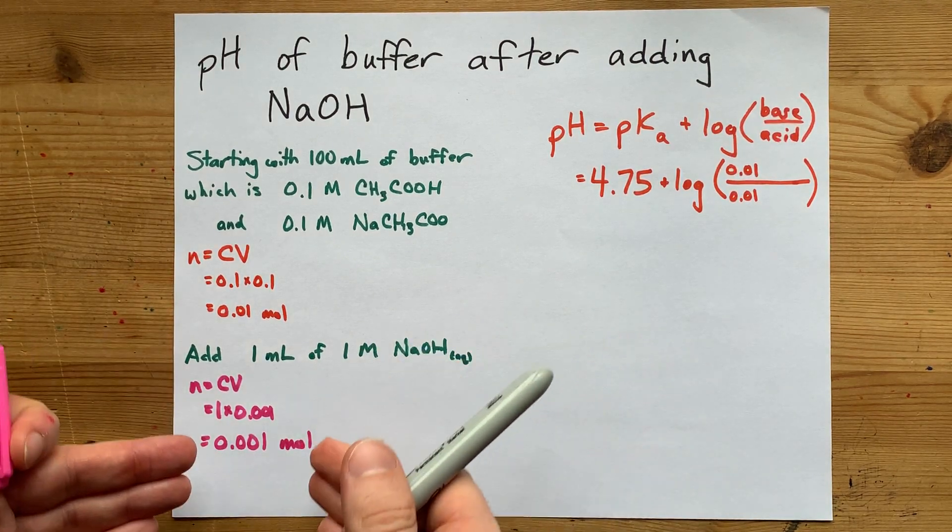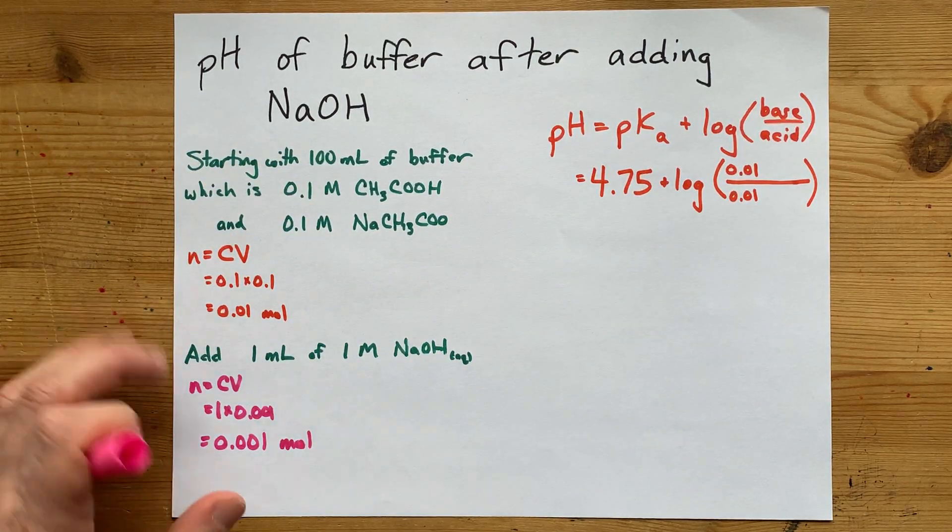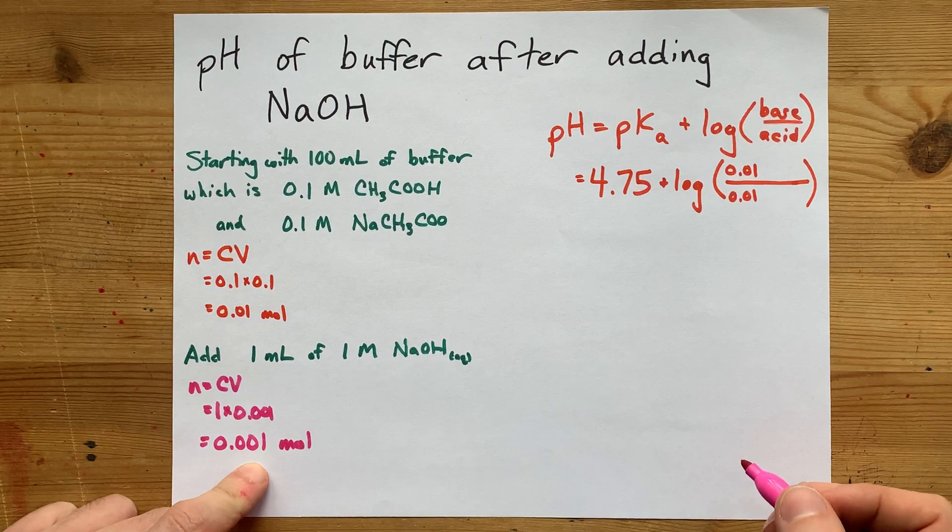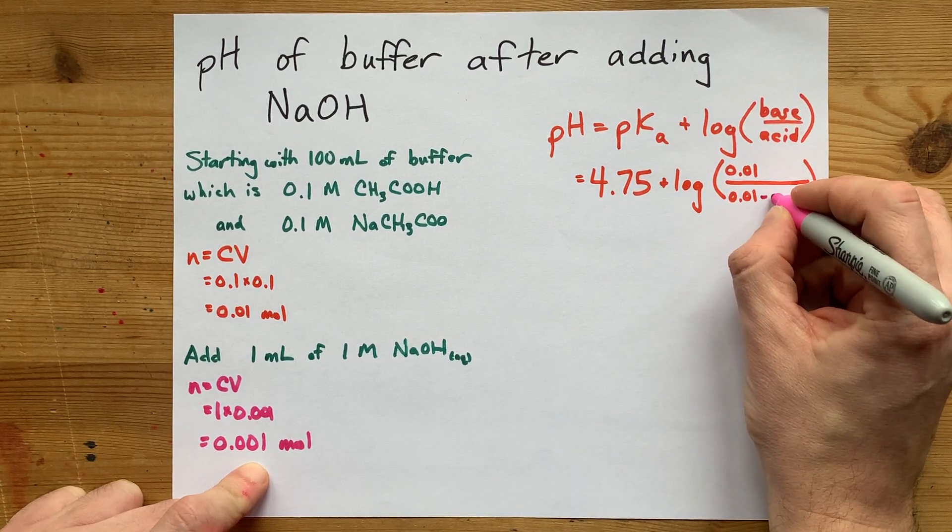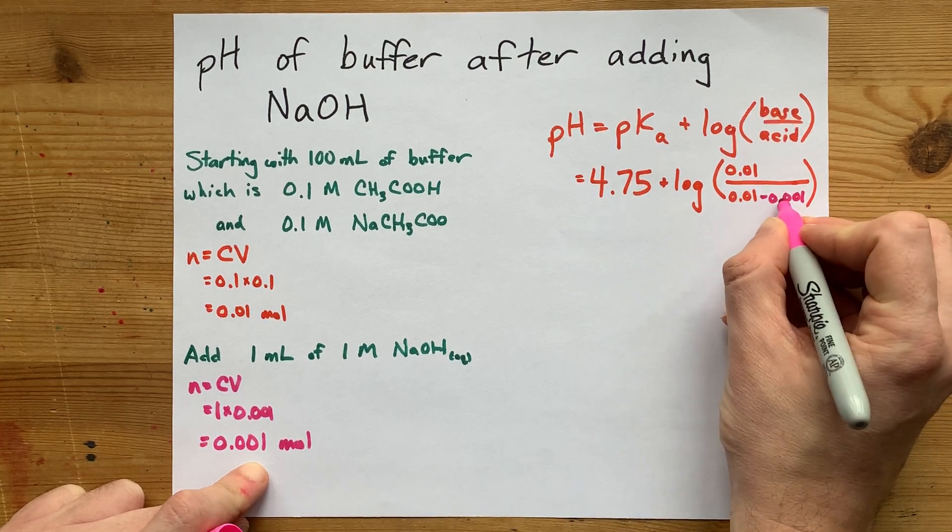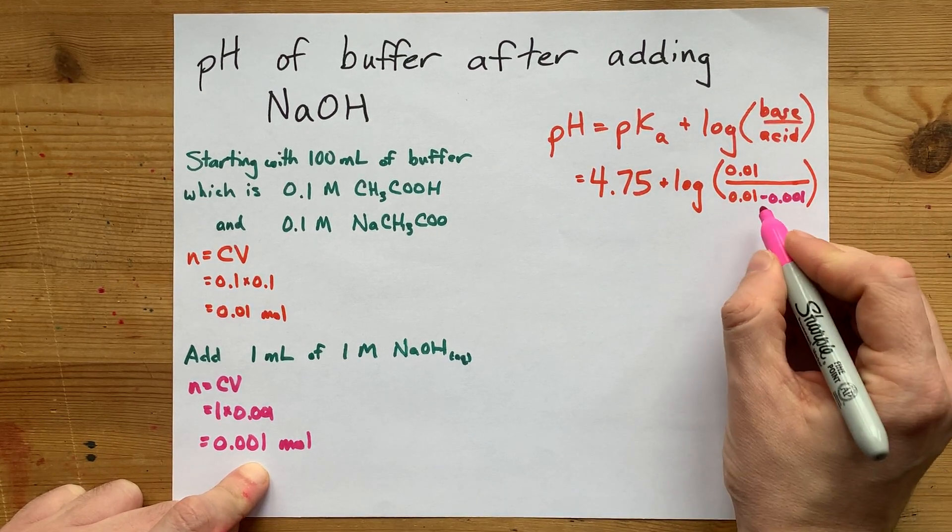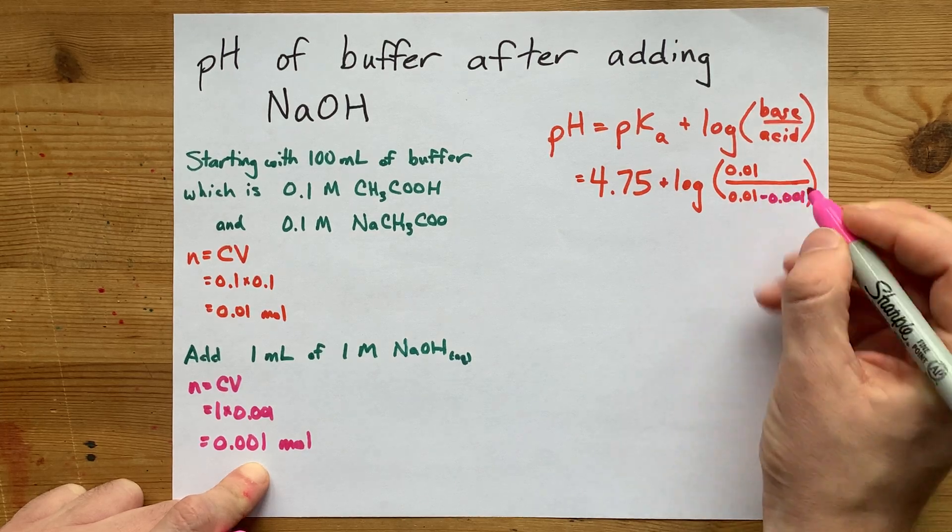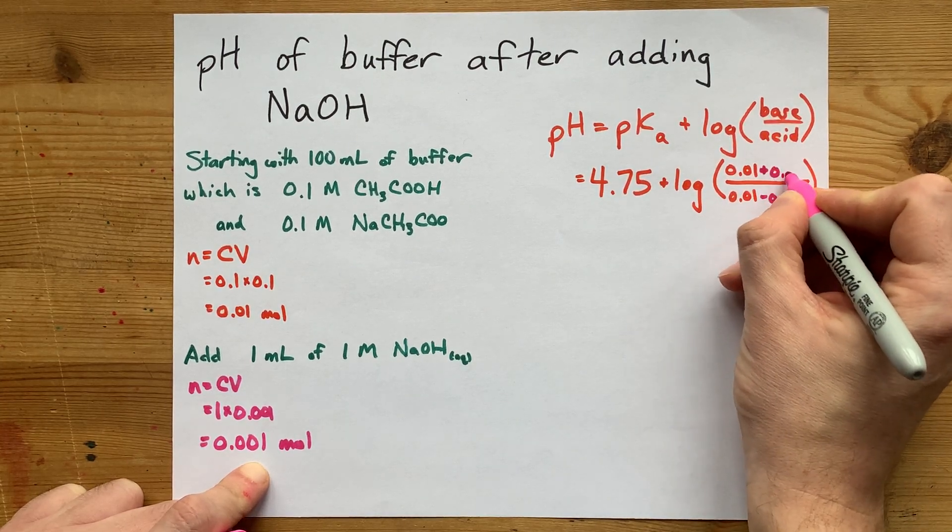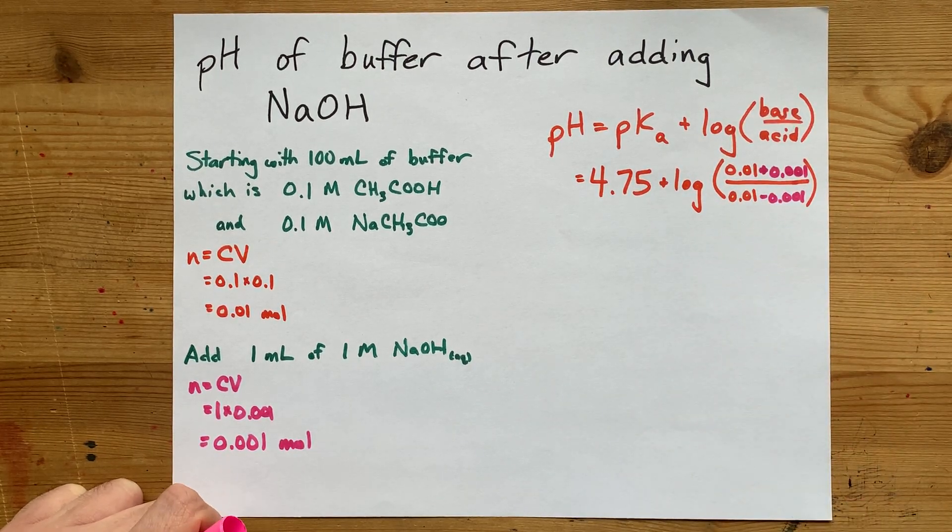What's the effect of adding the strong base on the balance between acid and base? That amount of strong base will neutralize or take away some of the acid. So I'm taking away where the acid goes in the denominator, and it's converting that weak acid directly into conjugate base. So I'm going to add on to the conjugate base term here.